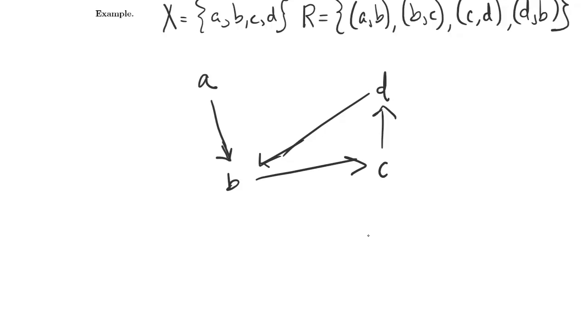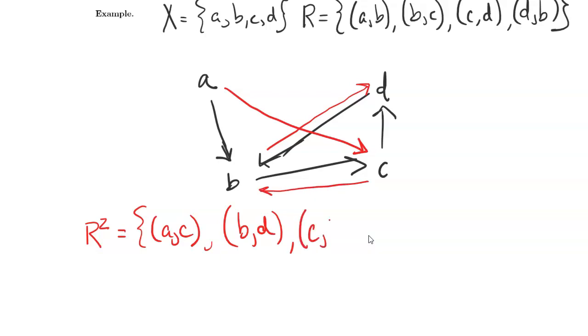So let's let the red pen be the pairs in R², and so we're going to get AC in that. We can get from B to C and from C to D, so we need to get straight from B to D. We can get from C to D and from D to B, so we need to get straight from C to B. And likewise we can go from D to B to C, so we need to be able to go straight from D to C.